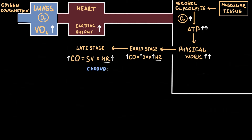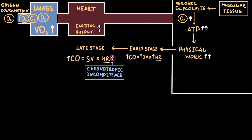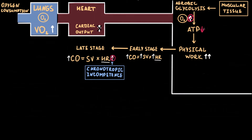So, in case of chronotropic incompetence, heart rate cannot be accelerated in response to physical work. Therefore, cardiac output cannot be enhanced. As a result, additional oxygen cannot be delivered in time to the muscular tissue, which impairs ATP production and causes symptomatic exercise intolerance — typically represented as exertional dyspnea and fatigue.